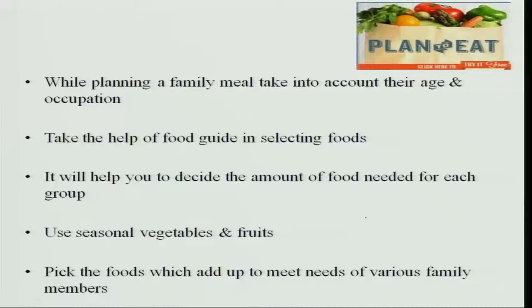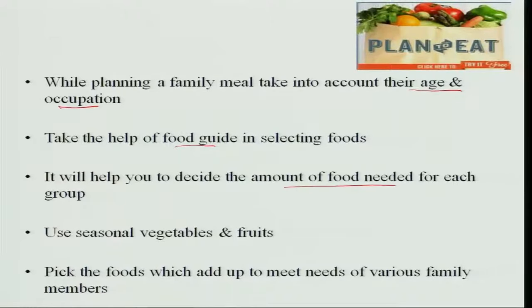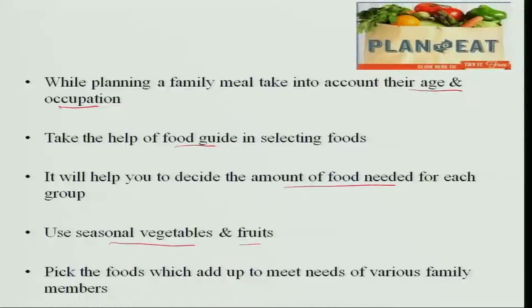While planning a family meal you should take into account the age and occupation of all family members because you have different age groups and different types of work they attend to. With the help of the food guide, you start selecting foods suitable for different ages and occupations, and decide the amount of food needed for each group, because a younger one may require less food compared to an adult. Use seasonal vegetables and fruits so that they are fresh, inexpensive, and provide variety.